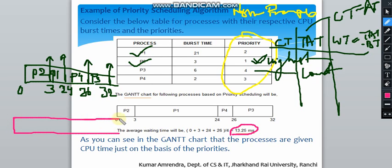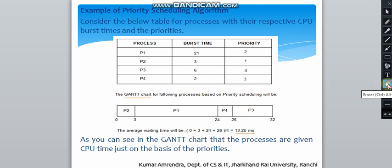Now let's look at the same question but for preemptive priority scheduling. In preemptive scheduling, if a higher priority process arrives while another is running, the CPU is taken away. Here the arrival times are different: 0, 3, 4, and 8.